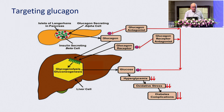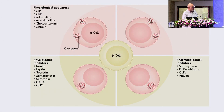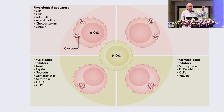This is the pancreas with the glucagon-secreting alpha cell. If you target glucagon, it targets glycogenolysis and gluconeogenesis. Glucagon antagonists will target glucagon directly. GLP-1 receptor analogs also work on the glucagon receptor. Physiological activators of glucagon include GIP, GRP, and adrenaline-acetylcholine. SGLT-2 inhibitors and sulfonylureas are pharmacological activators of glucagon. That's why we don't lose as much weight with SGLT-2 inhibitors — the glucagon values go up.